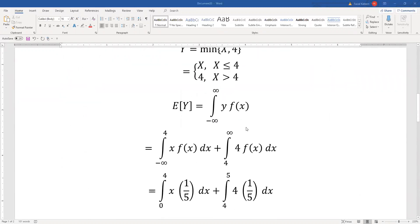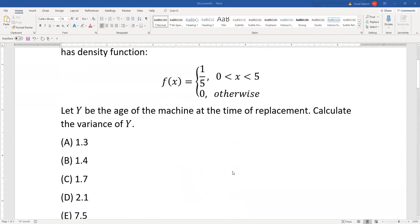And then f(x) is 1 over 5, and the 4 to infinity is effectively 4 to 5 because it finishes at 5.